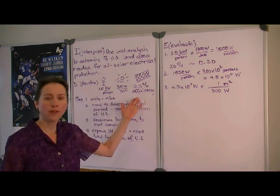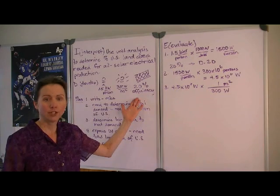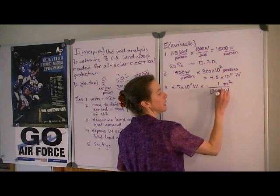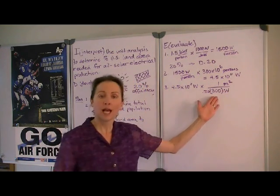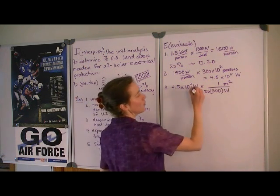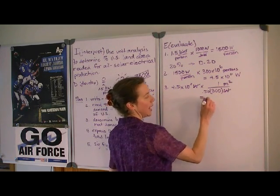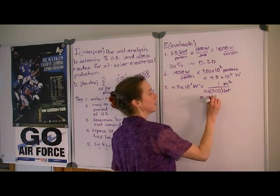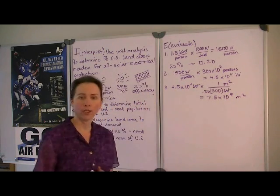Now we're also told that the solar panels aren't 100 percent efficient in converting that into electrical energy. And in fact, it's 20 percent efficient. So what we actually get out per meter squared is that efficiency times what the sun is delivering. So then we will have watts cancelling out, and we will be left with meters squared. And that is going to give us 7.5 times 10 to the 9th meters squared are needed for the total production.